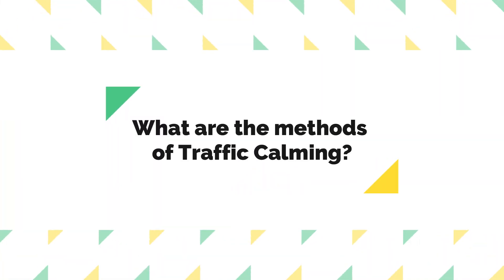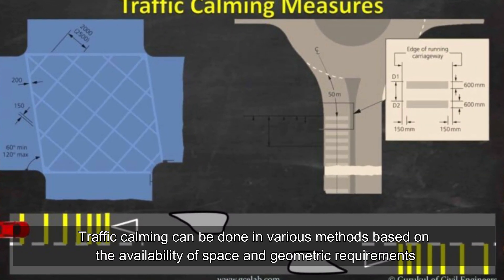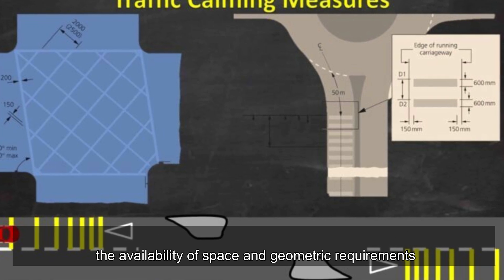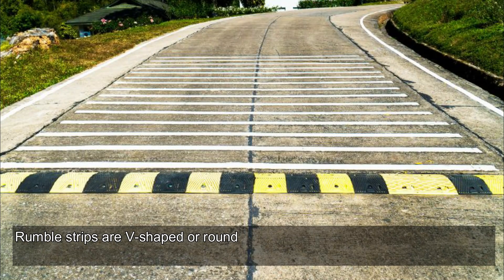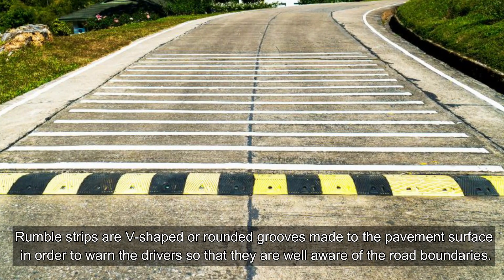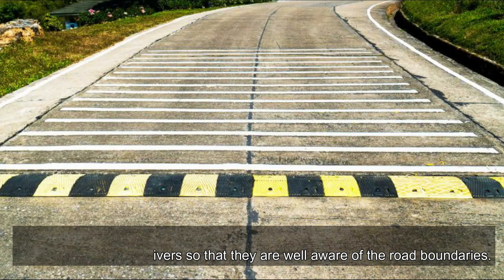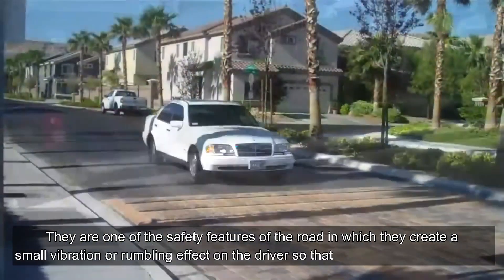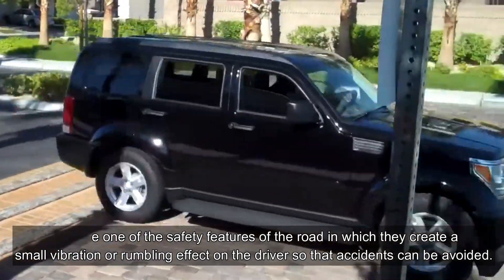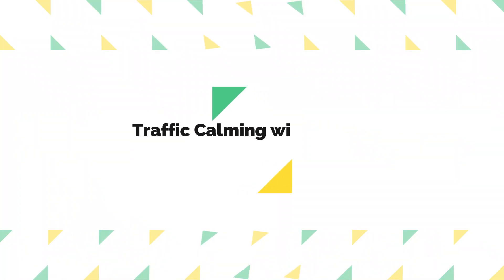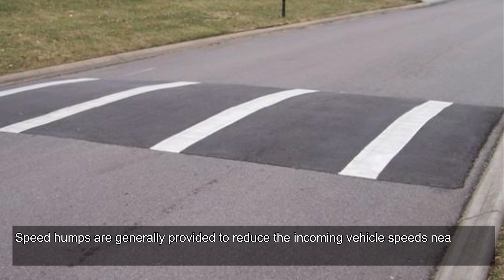What are the methods of traffic calming? Traffic calming can be done in various methods based on the availability of space and geometric requirements. Traffic calming with rumble strips: rumble strips are V-shaped or rounded grooves made to the pavement surface in order to warn the drivers so that they are well aware of the road boundaries. They are one of the safety features of the road, creating a small vibration or rumbling effect on the driver so that accidents can be avoided.